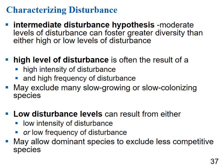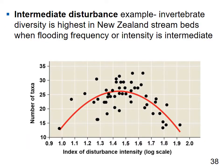The intermediate disturbance hypothesis says moderate levels of disturbance foster greater diversity than either high or low levels. High-intensity or high-frequency disturbances can exclude slow-growing or slow-colonizing species. Low levels of disturbance allow dominant species to exclude less competitive species. A graph from a New Zealand stream bed shows that when flooding frequency or intensity is intermediate, the number of invertebrate taxa is highest.